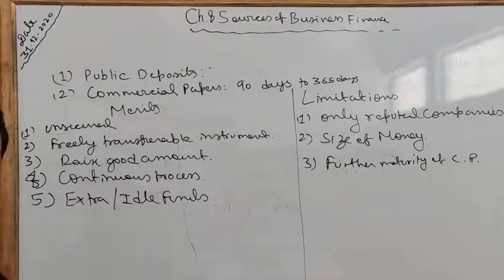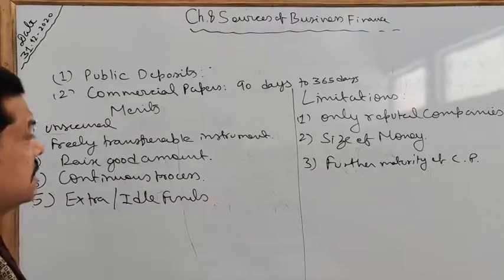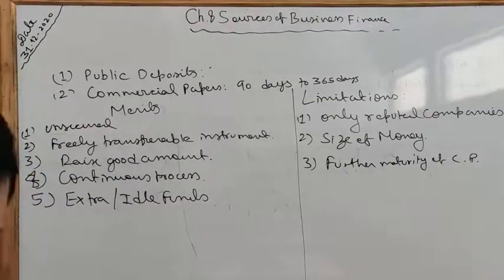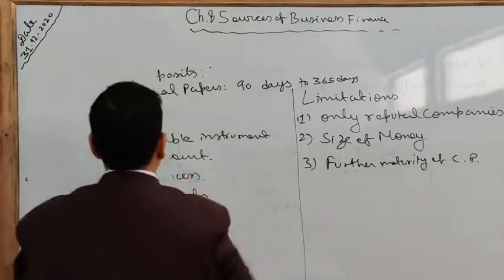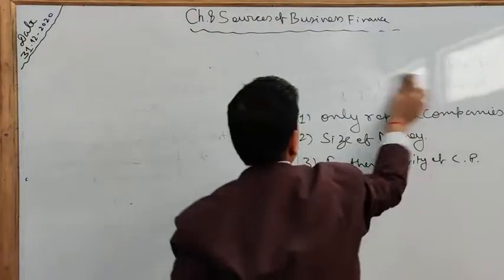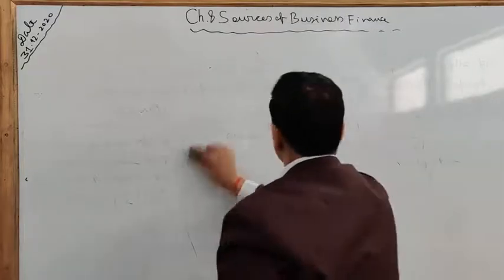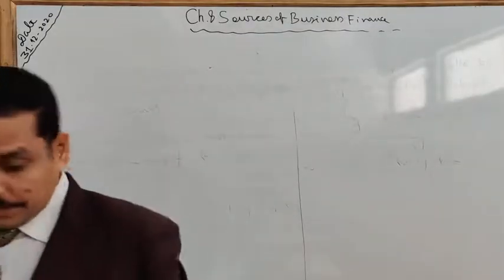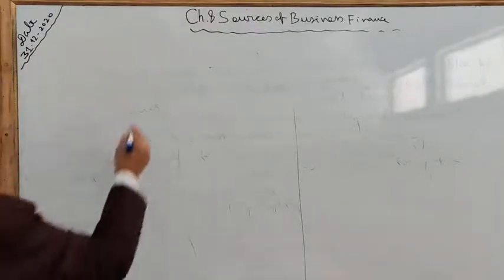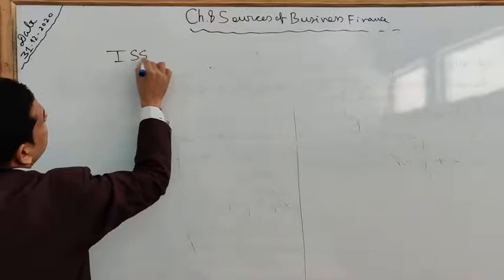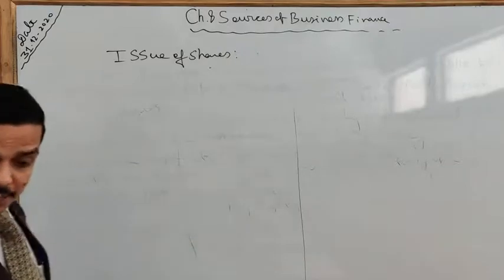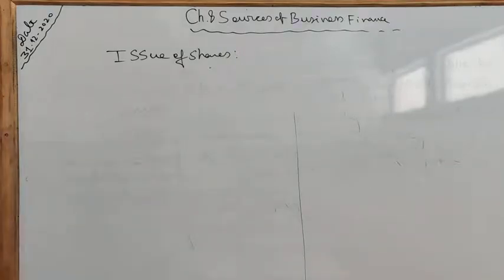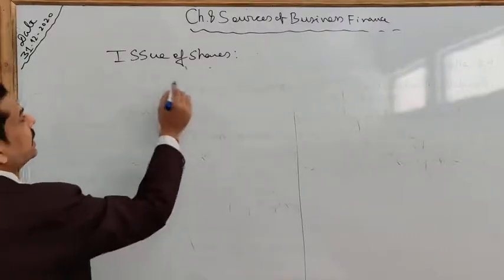So there are some merits and limitations of commercial paper. Now we are going to study the issue of shares, which is the next method of raising money. The capital obtained by the issue of shares is known as share capital. The capital of a company is divided into small units called shares — a very big amount of capital is broken into small parts.